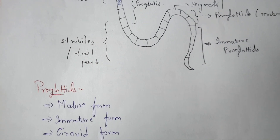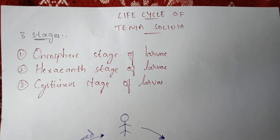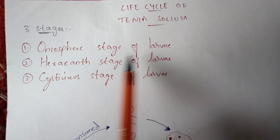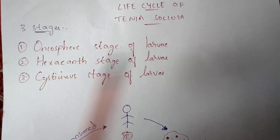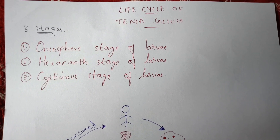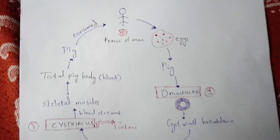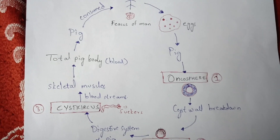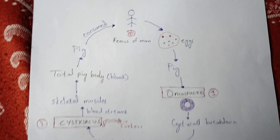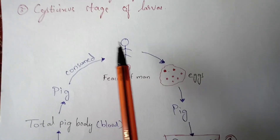Now let us look at the life cycle of Taenia solium. This life cycle includes three stages of larvae: the oncosphere stage of larva, the hexacanth stage of larva, and the cysticercus stage of larva. These are the three larval stages observed during the life cycle of Taenia solium.